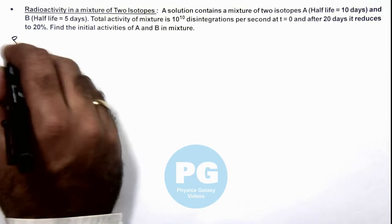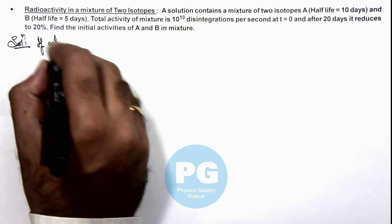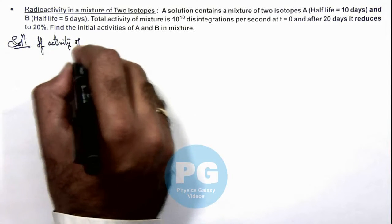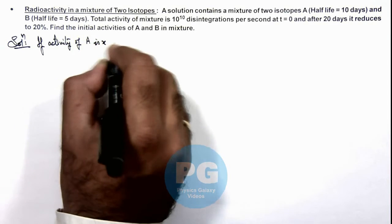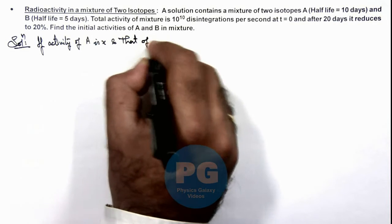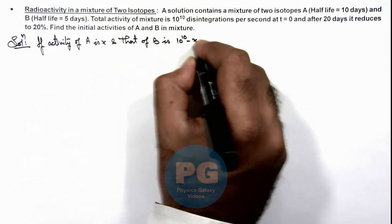Here in the solution we can write: if the activity of A is x, and that of B is 10^10 minus x initially.